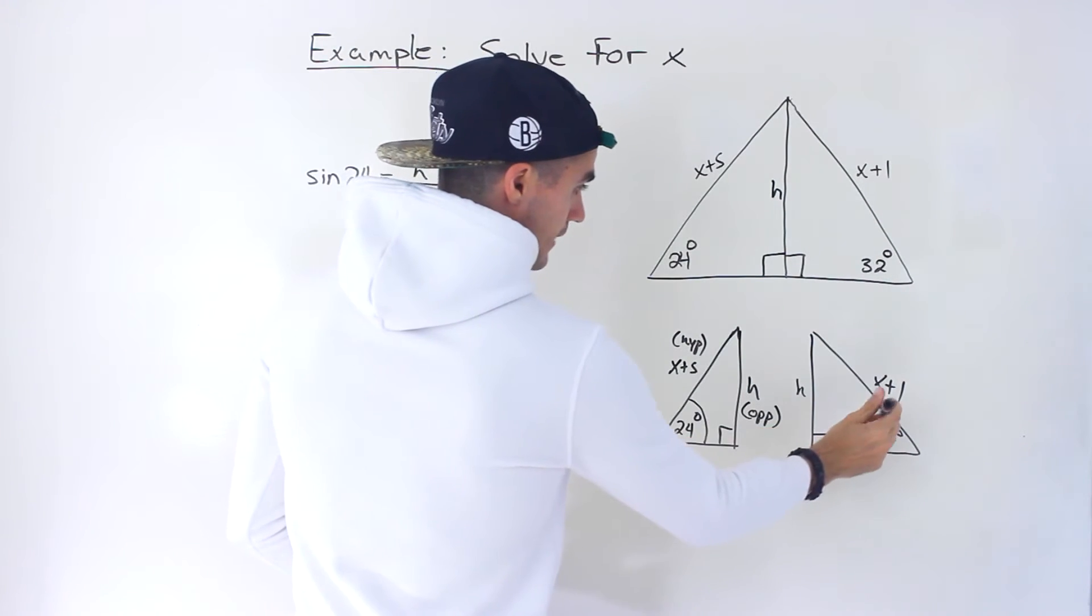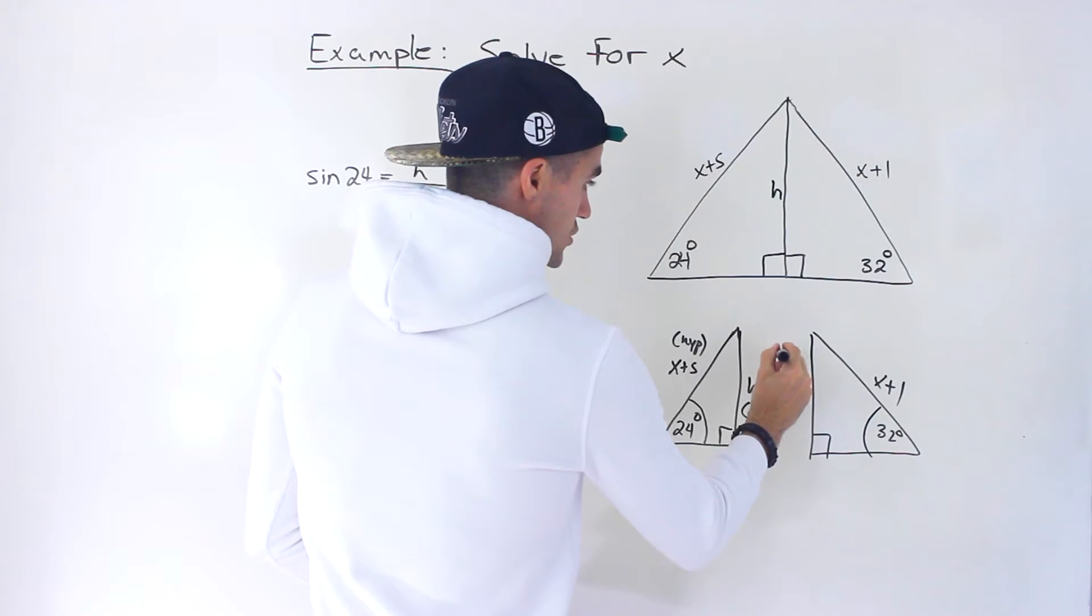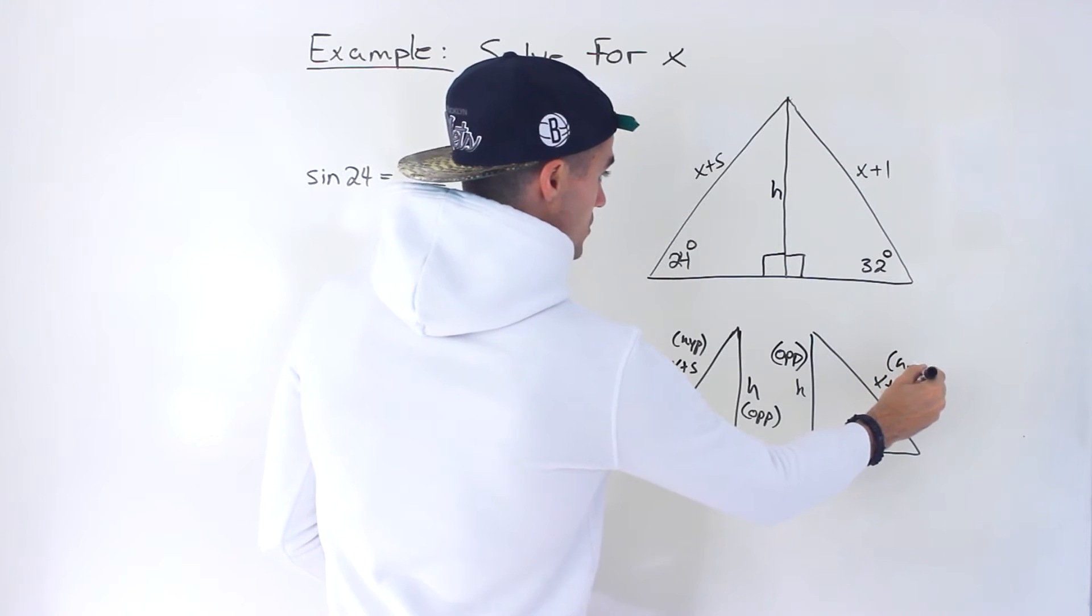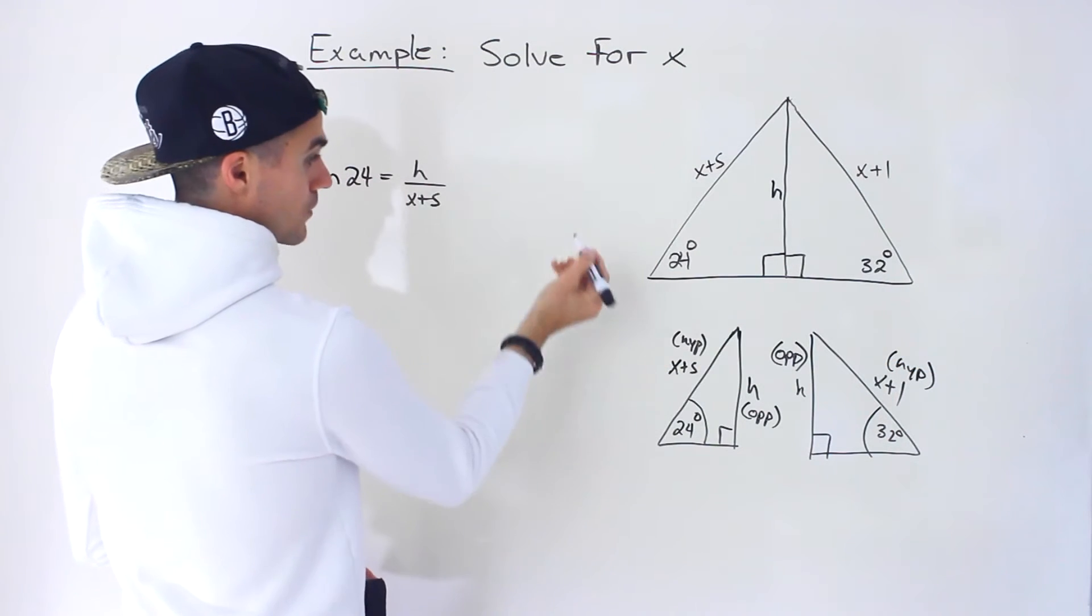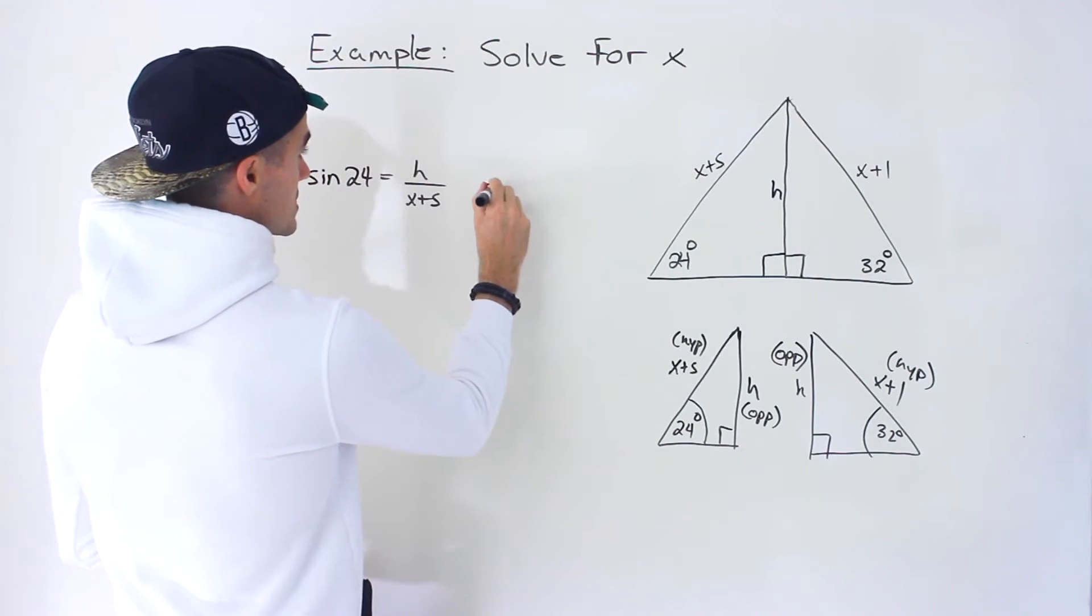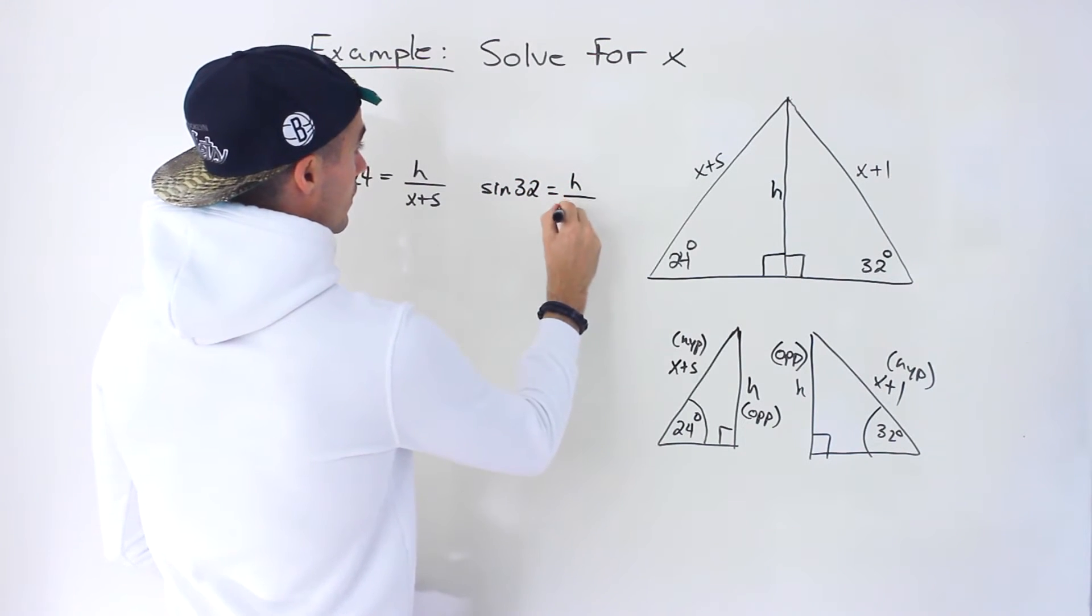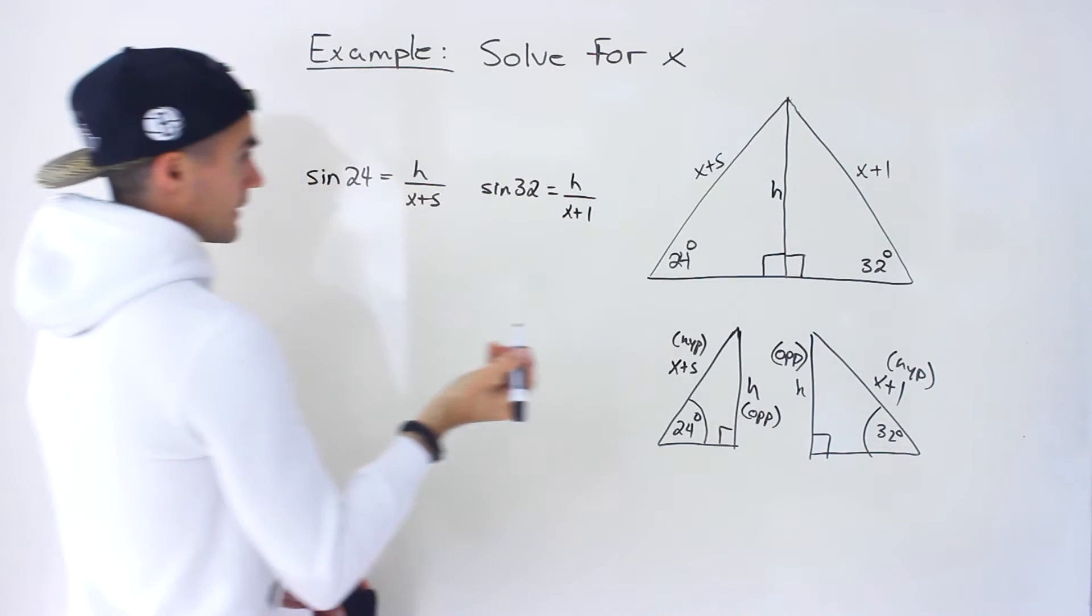Same thing here, we got this angle of 32 degrees. Notice that the h is also the opposite side and the x plus 1 is the hypotenuse. So we can create another ratio where sine of 32 is equal to h over x plus 1.